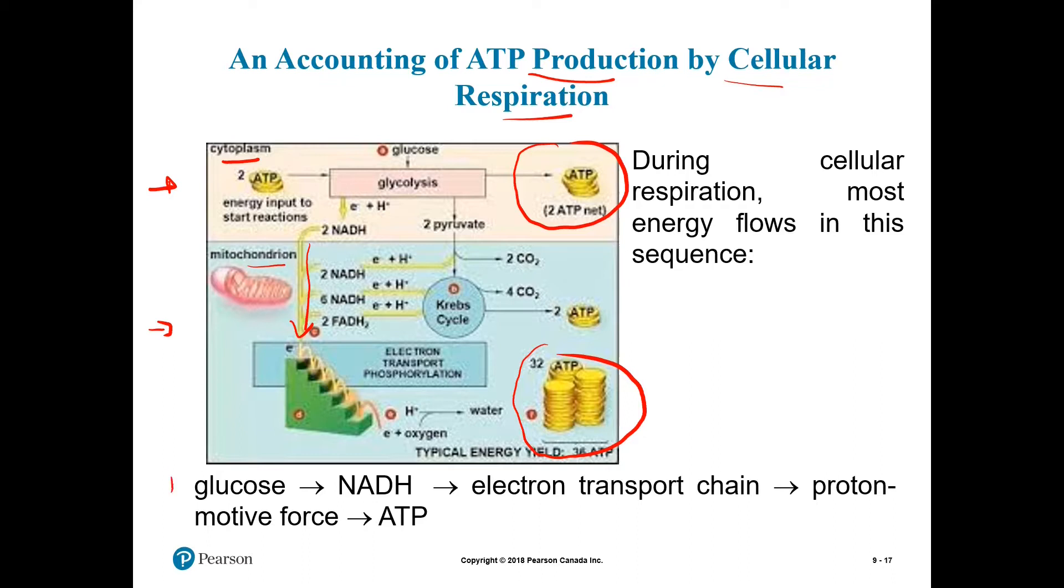And this is the order of the sequence. First, you have glucose here. Second, you will move all this glucose into NADH. Then you move these electrons into the electron transport chain here. This is the third section. And finally, as a result of the other section of the redox reaction, here you had electrons, now here you have protons. So you're going to have the proton motive force that will form ATP.